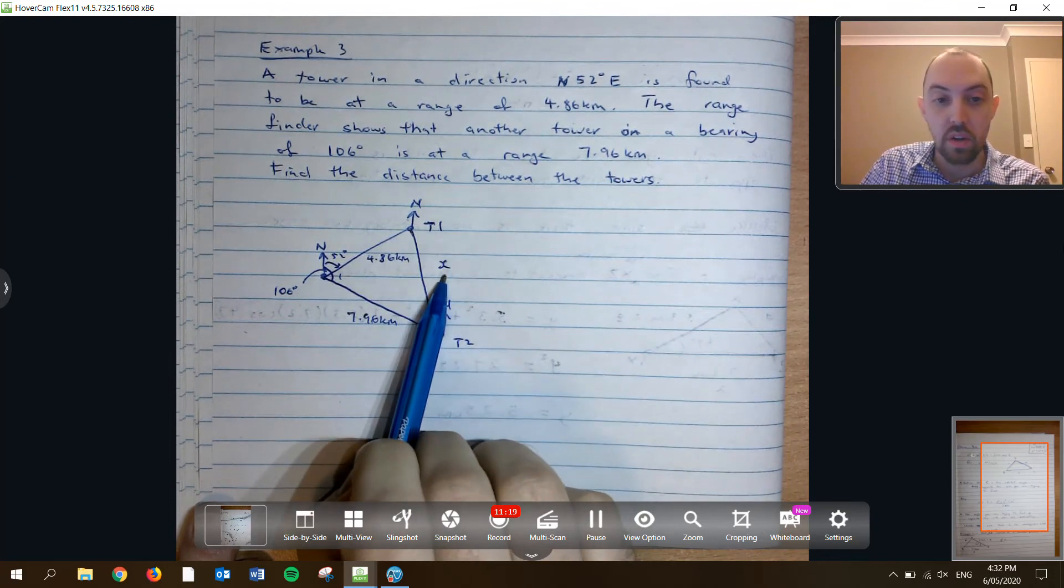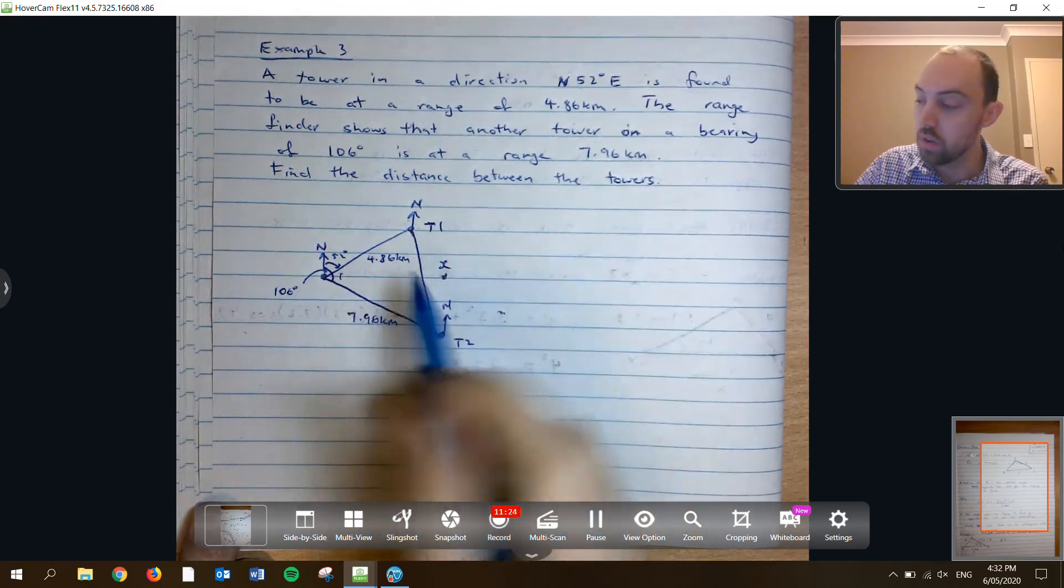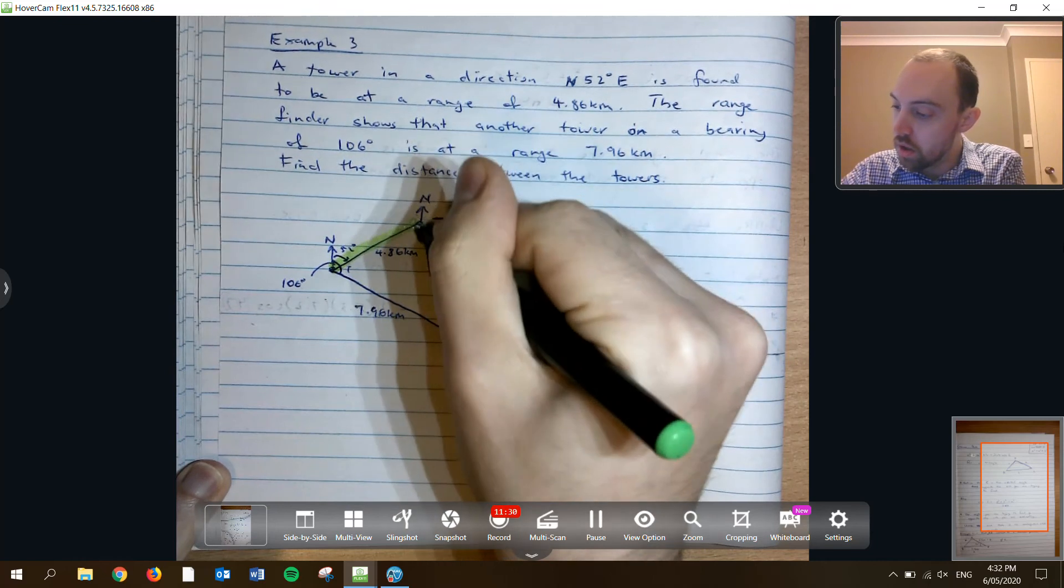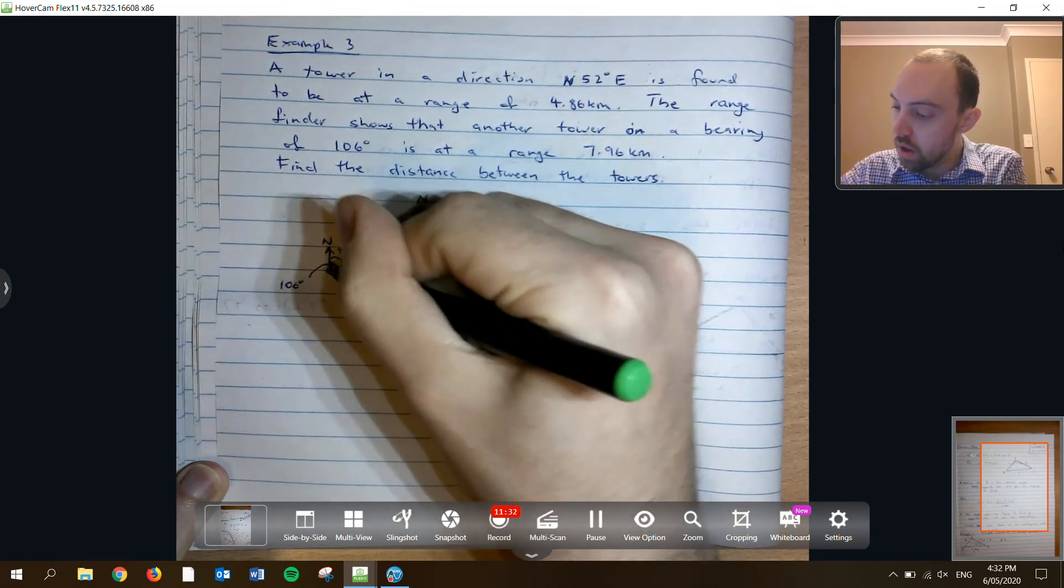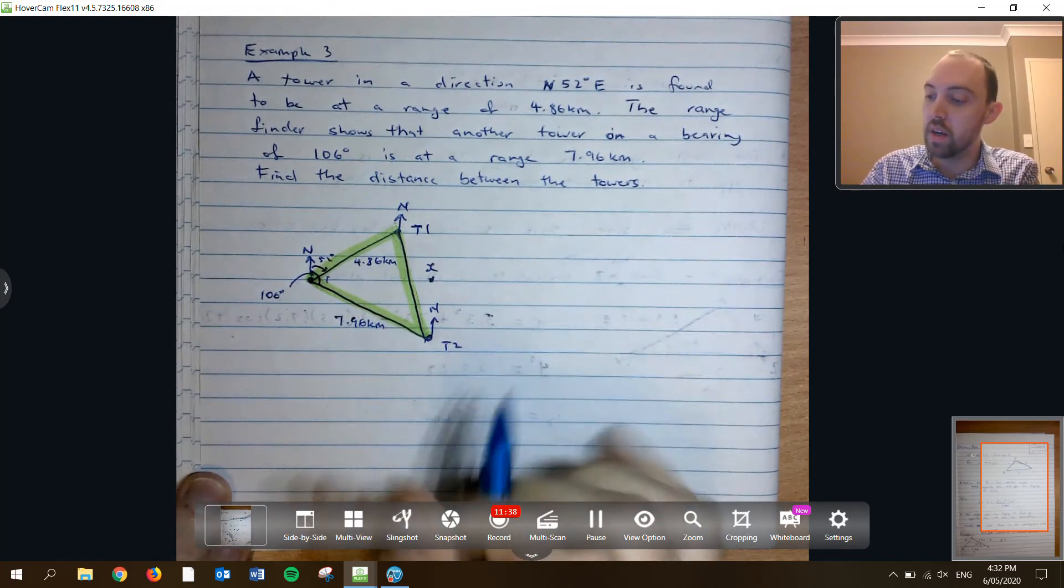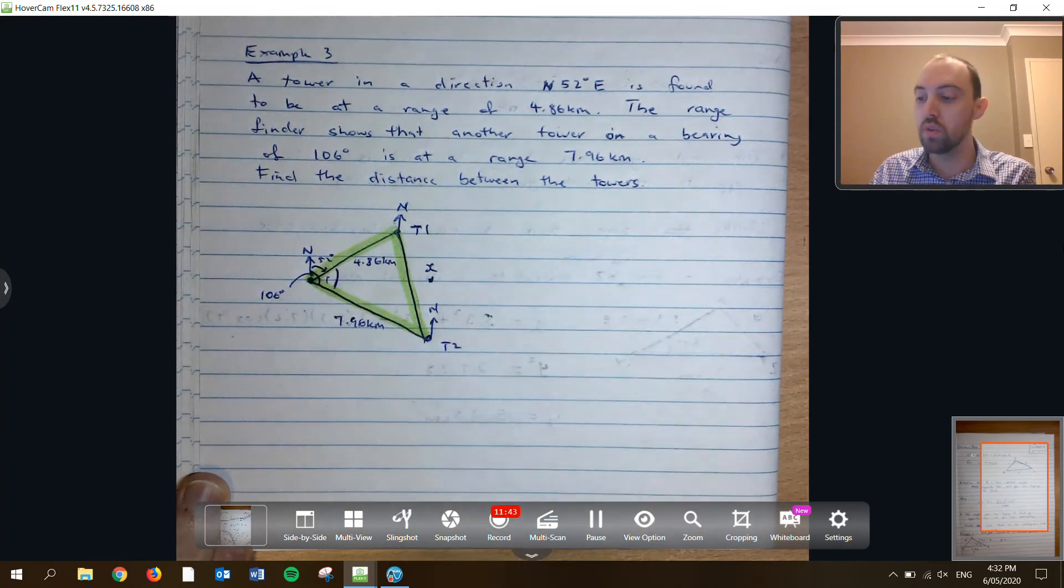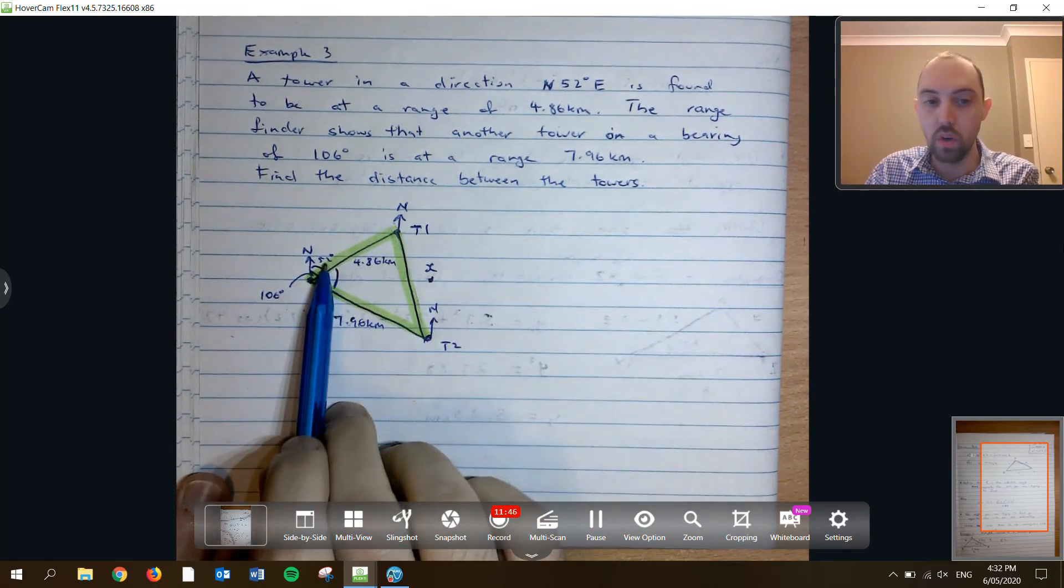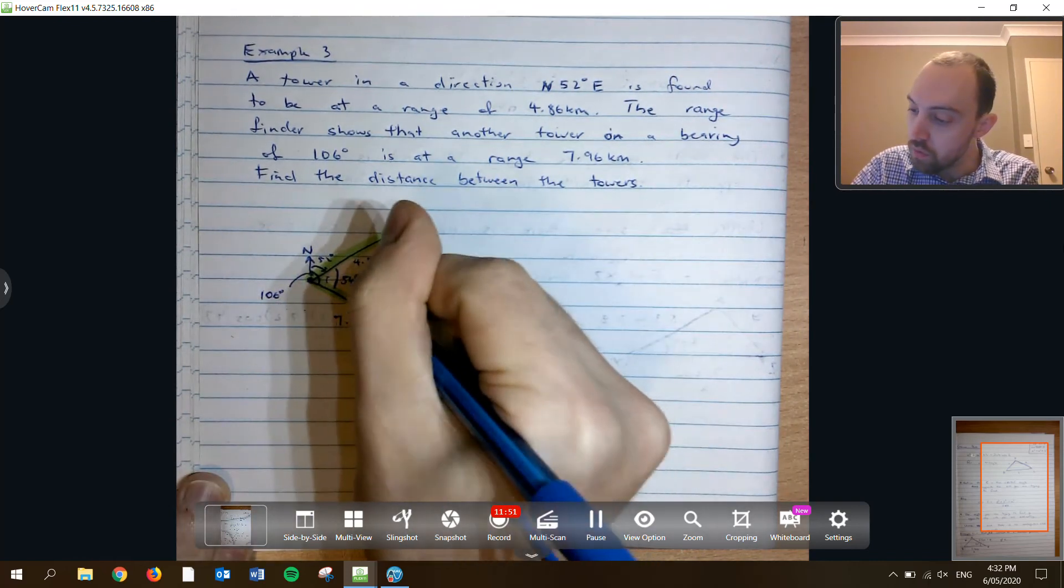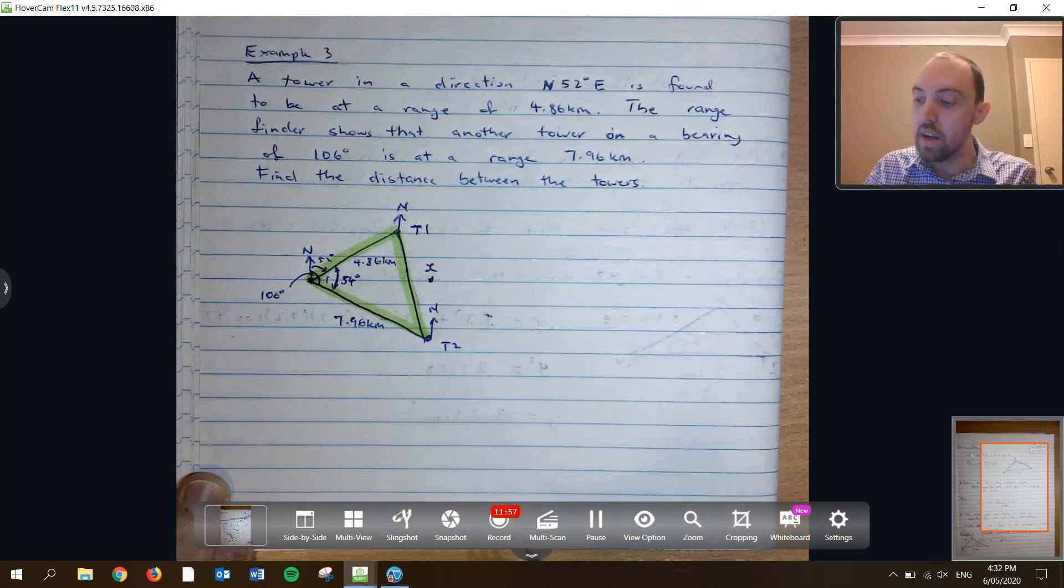So to find X using our cosine rule, we need the angle that is opposite it in a triangle. So hopefully we can see the triangle. Sometimes it might be useful to rewrite the triangle, but outside of your diagram. We need to find this angle between those two bearings. One was 52 degrees. The other one was 106. So 54 degrees is the difference. Now that we've got that, we can use the cosine rule.